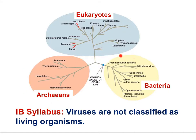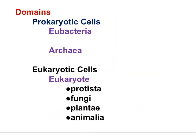The archaeans and the bacteria are single-celled prokaryotic organisms. The common ancestor of all life is at the base of the tree of life. The bacteria and the archaeans are single-celled organisms without a nuclear membrane around the DNA — they are prokaryotic cells. The organisms in the eukaryote domain are composed of cells with a nucleus; thus they are eukaryotic cells.